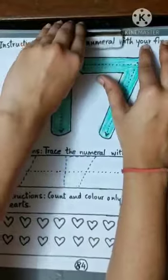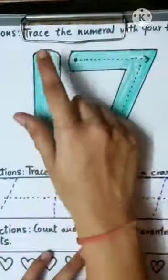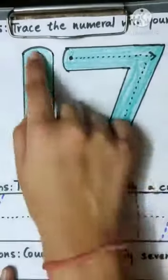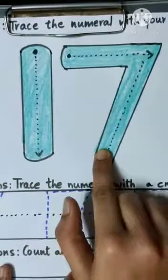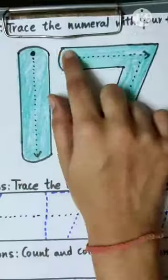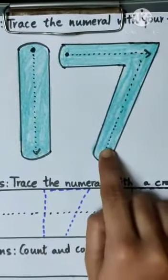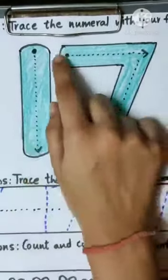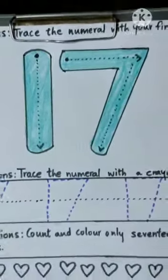We have to trace this numeral with our finger. 1, 7, 17. 1, 7, 17. A standing line, a sleeping line, and a standing line. 1, 7, 17. 1, 7, 17.